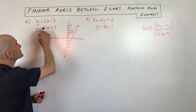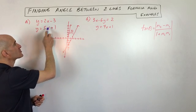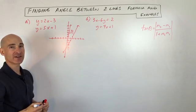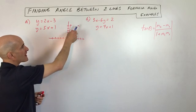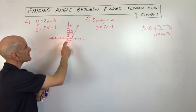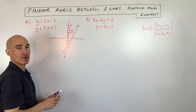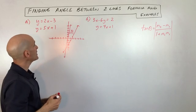So in this first example, our two lines are y equals 2x minus 3 and y equals 5x plus 1. I've graphed the two lines here for us and what we can see is that we're trying to find that angle between the two lines. So let's go ahead and apply our formula.